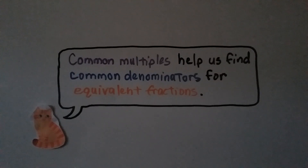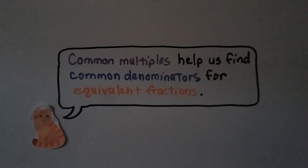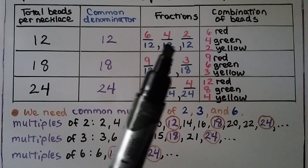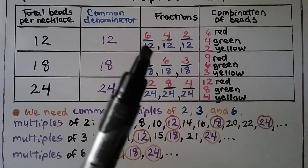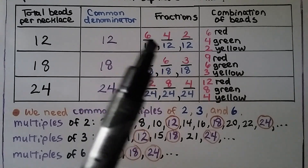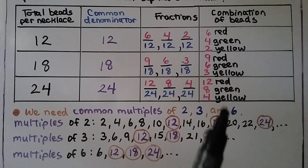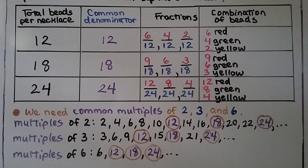Common multiples help us find common denominators for equivalent fractions. By finding common multiples, we write equivalent fractions with common denominators for one-half, one-third, and one-sixth, and we can find the combinations of beads that Sophia will use to make those necklaces.